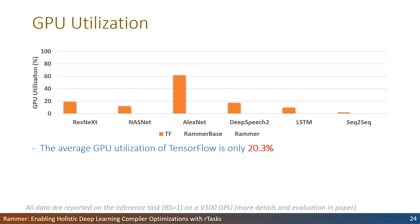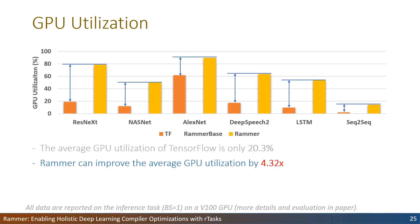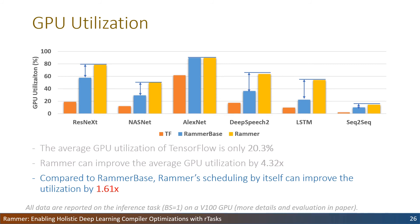Next, we examine how well Reimer utilizes GPU parallel resources on a V100 GPU. TensorFlow only achieves 20% GPU utilization on average across these 6 models. Reimer can improve average GPU utilization by more than 4 times compared with TensorFlow. To remove side effects from different implementations, we create a baseline named ReimerBase, which can be treated as a two-layer DL compiler implemented in the same codebase as Reimer. Compared with ReimerBase, Reimer improves utilization by 1.6 times, thanks to operator co-scheduling.